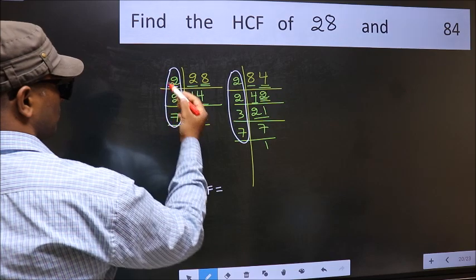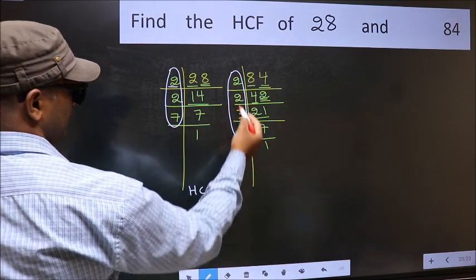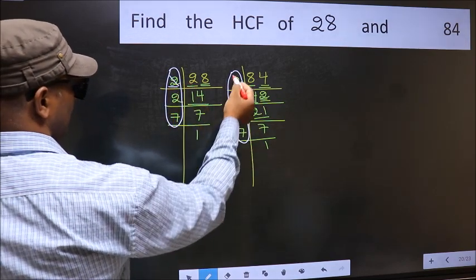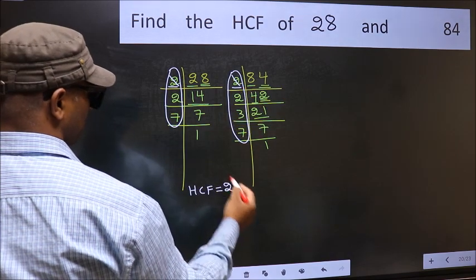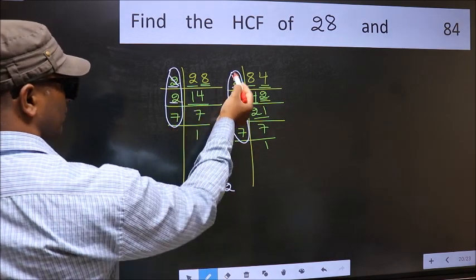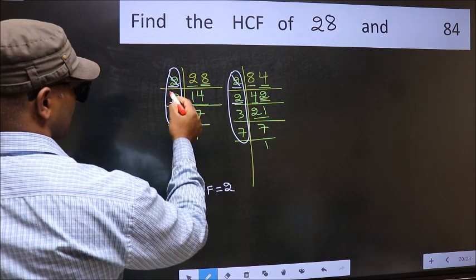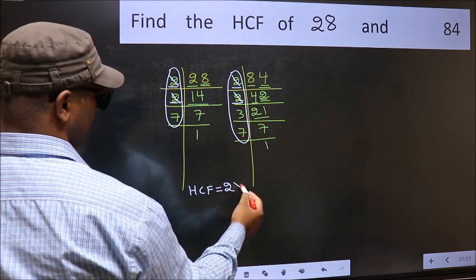Starting with the number 2, do we have 2 here? Yes, so cut 2 right here. Next number 2, do we have 2 here? Yes, so cut 2 right here.